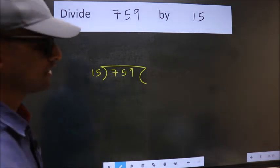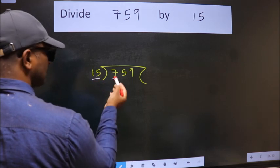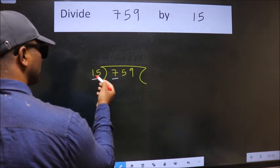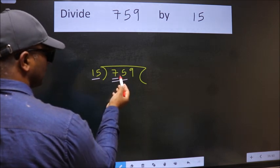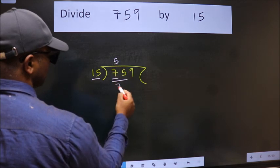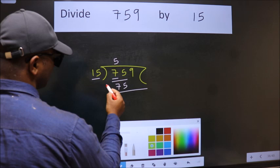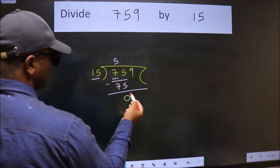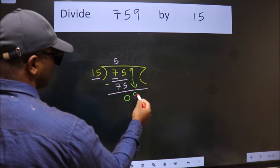Next, here we have 7. Here 15. 7 is smaller than 15, so we should take two numbers, 75. When do we get 75 in 15 table? 15 fives 75. Now we should subtract. We get 0. After this bring down the beside number, so 9 down.